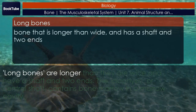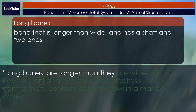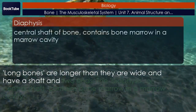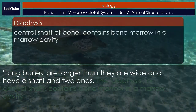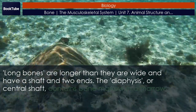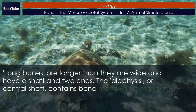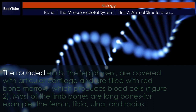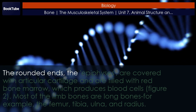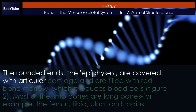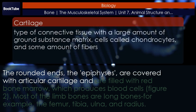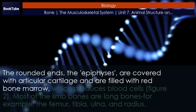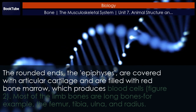Long bones are longer than they are wide and have a shaft and two ends. The diaphysis, or central shaft, contains bone marrow in a marrow cavity. The rounded ends, the epiphysis, are covered with articular cartilage and are filled with red bone marrow, which produces blood cells.